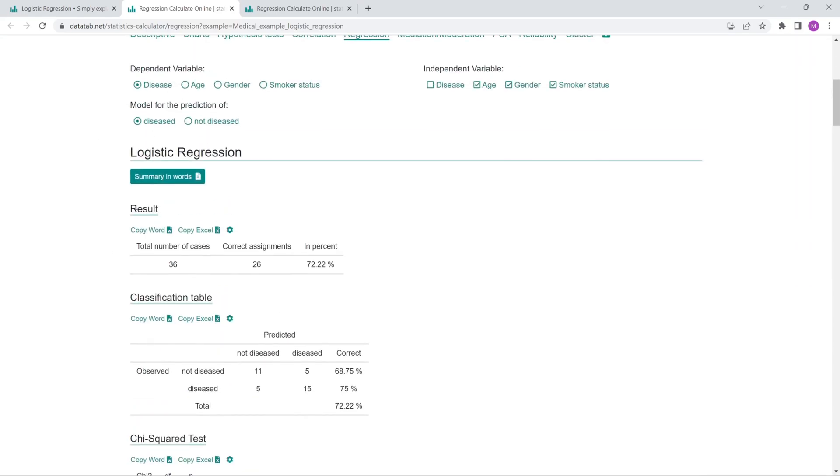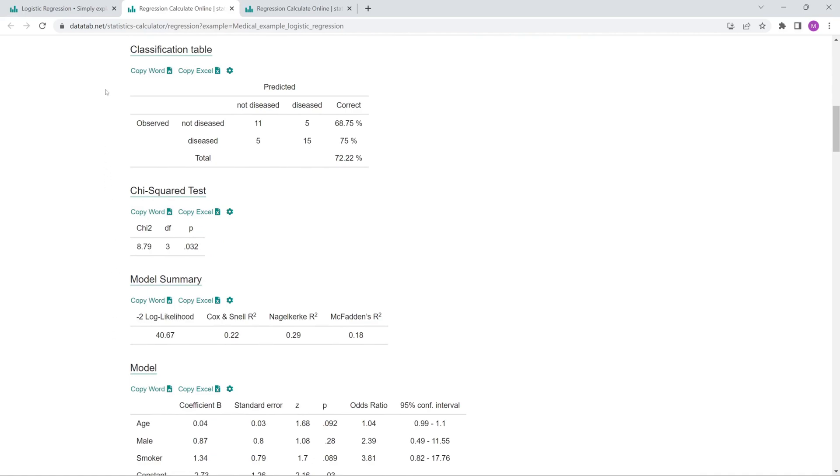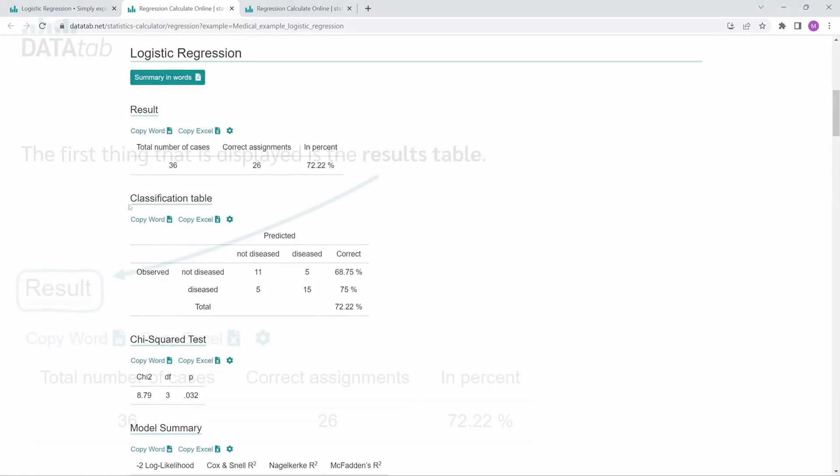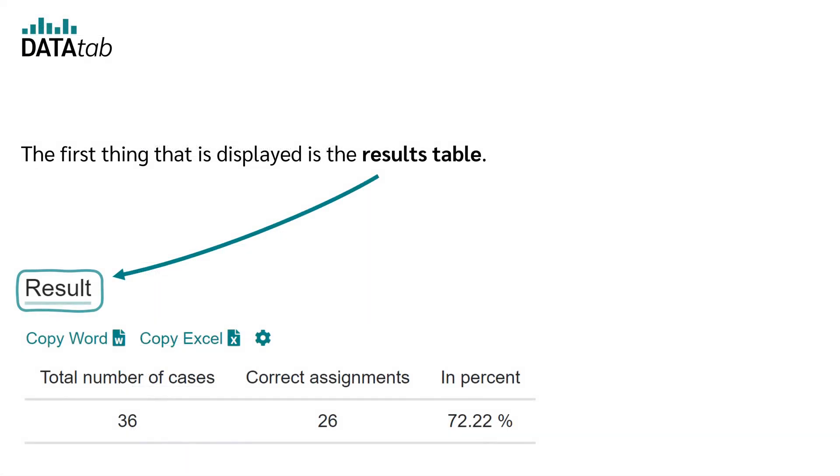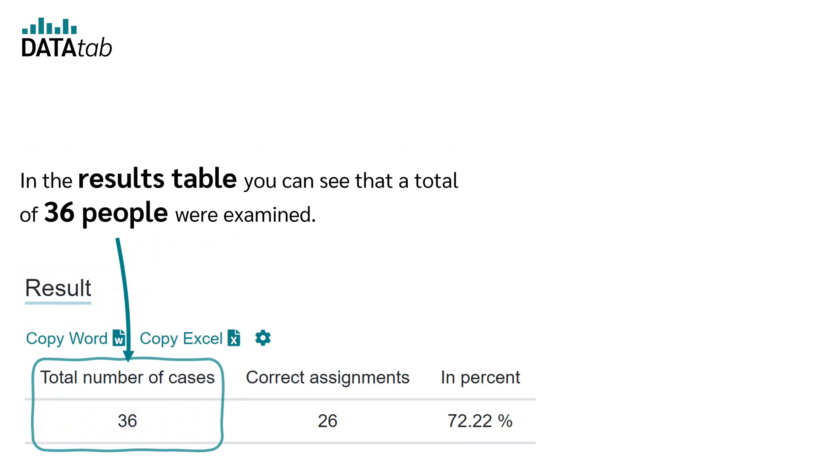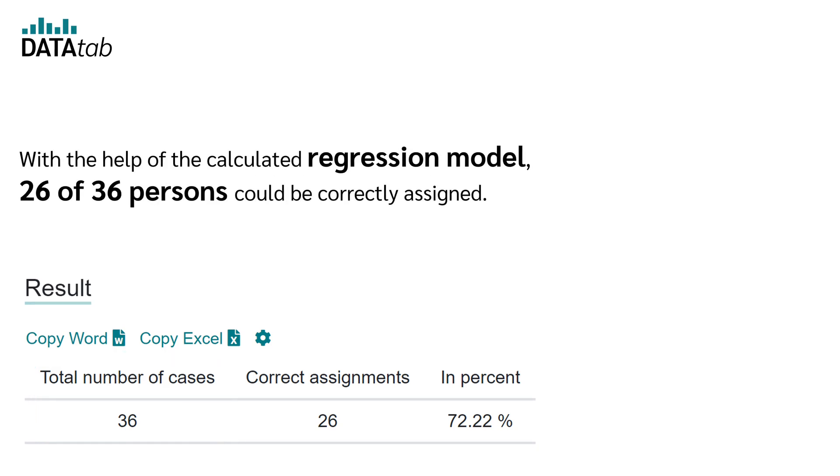But now in detail to the results. We will now go through all the tables slowly and understandably. Let's start at the top. The first thing that is displayed is the results table. In the results table, you can see that a total of 36 people were examined. With the help of the calculated regression model, 26 of 36 persons could be correctly assigned. That is 72.22%.